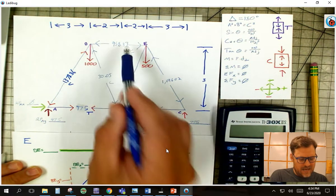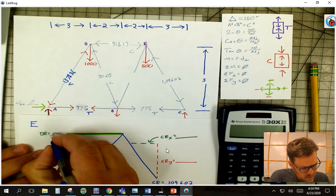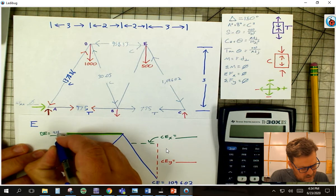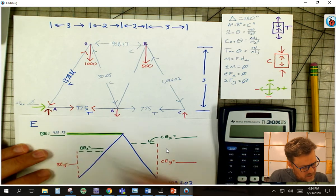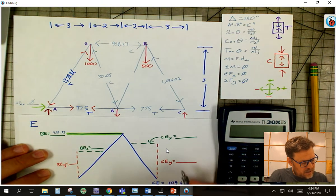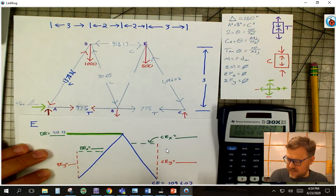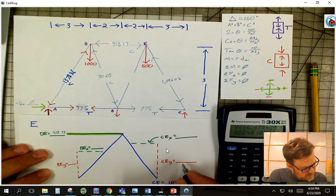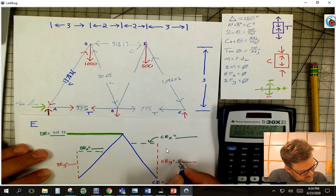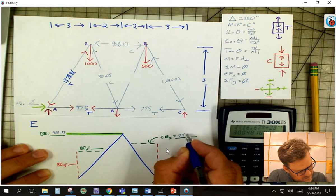The first is DE. I can bring in that number, 958.33, and I already brought in that number, and I could go back to joint C, and I would see that both of these are 775 and 775.